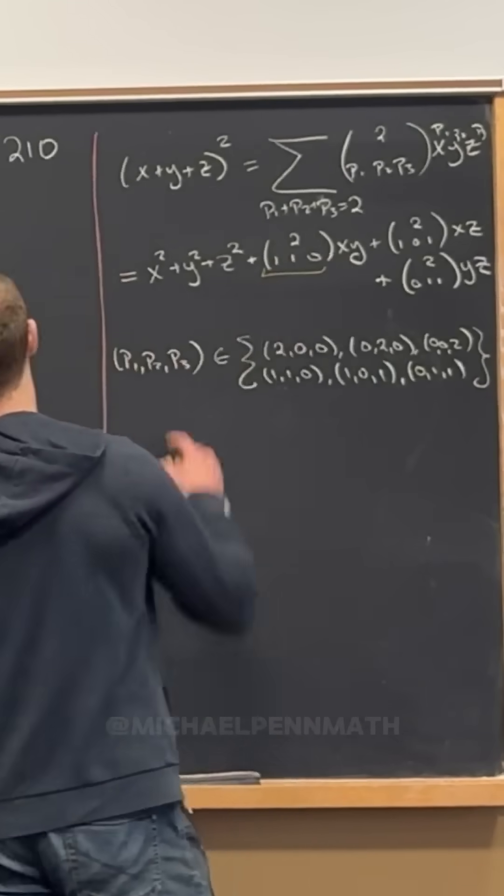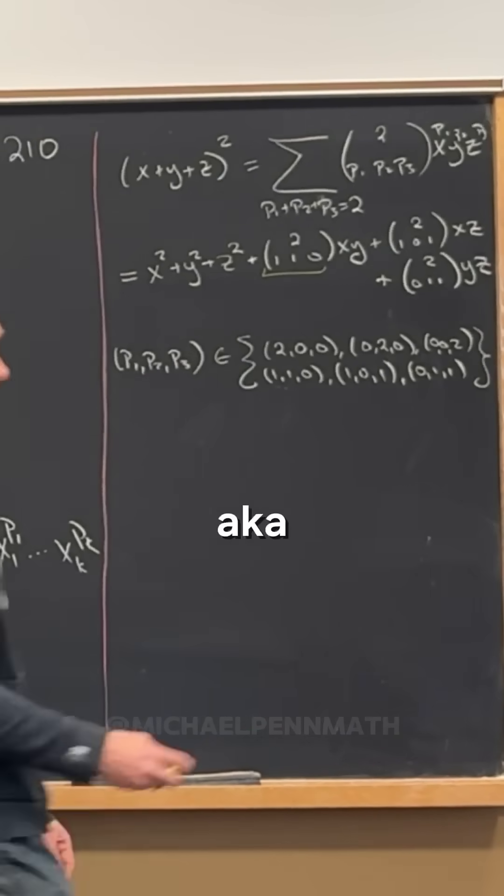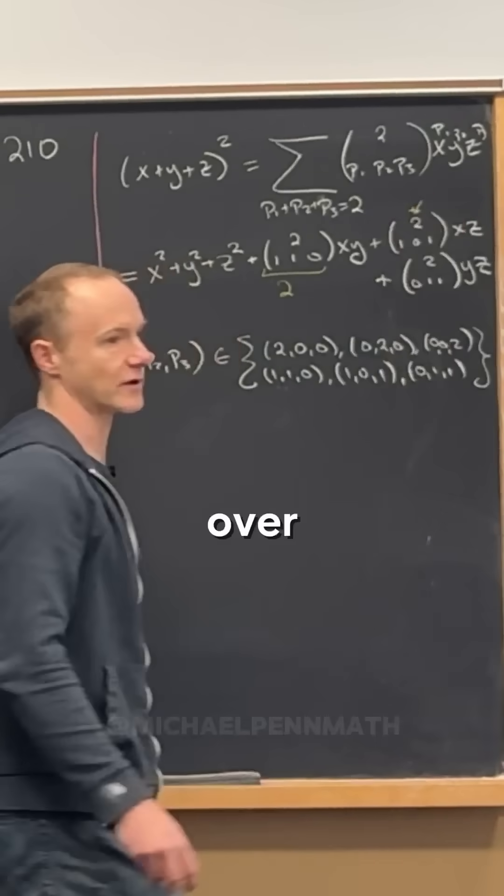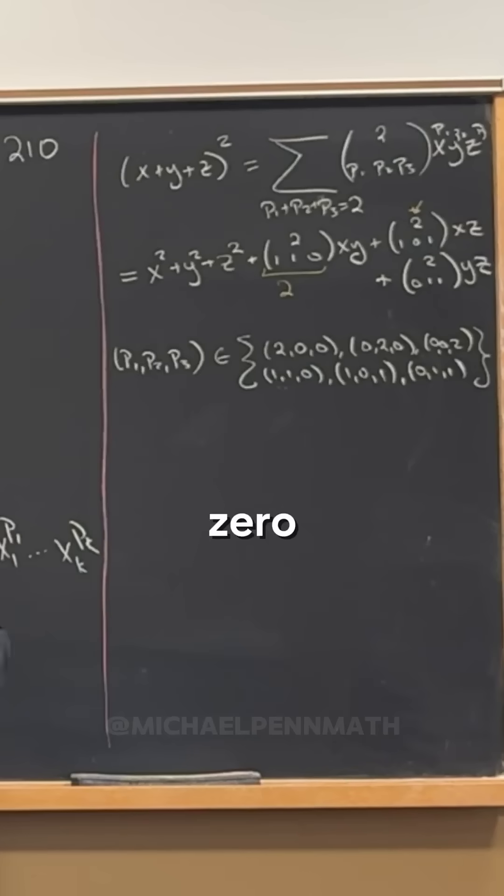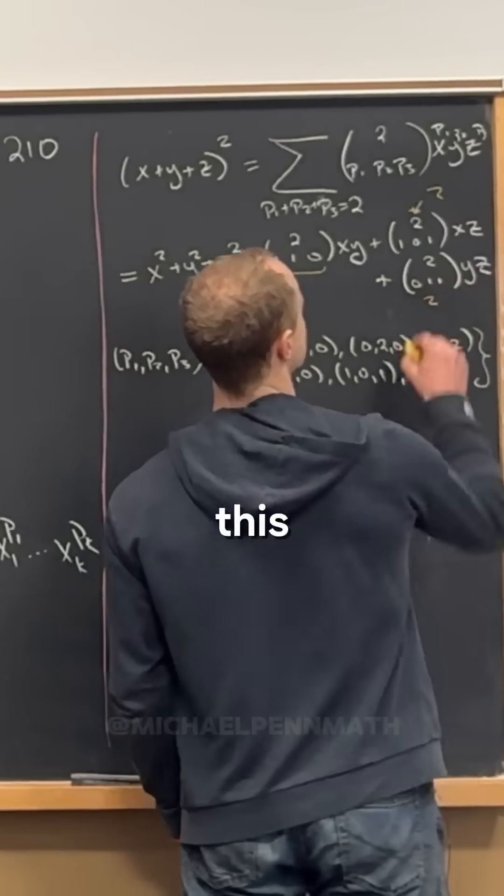But now we can just calculate this. Like, this is 2 factorial over 1 factorial times 1 factorial times 0 factorial, aka this is 2. And then this is 2 factorial over 1 factorial times 0 factorial times 1 factorial, which is also 2. And then this is also 2.